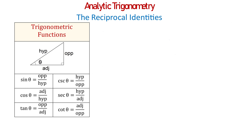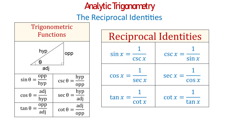Now let's see the trigonometric identities that are called the reciprocal identities. Here we have the six reciprocal identities. The first one is sine of x equals 1 over cosecant of x, since sine is the reciprocal of cosecant. Then cosecant of x equals 1 over sine of x. The rest of the reciprocal identities are: cosine of x equals 1 over secant of x, secant of x equals 1 over cosine of x, tangent of x equals 1 over cotangent of x, and cotangent of x equals 1 over tangent of x. One use of trigonometric identities is simplifying trigonometric expressions.